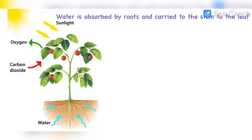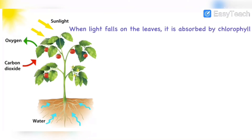The next step is that when light falls on the leaves, it is absorbed by chlorophyll. The leaves are green because chlorophyll is present in them — chlorophyll is what makes the leaves green. So when sunlight falls on the leaves, it is absorbed only by the chlorophyll.